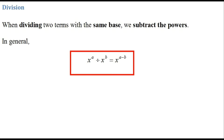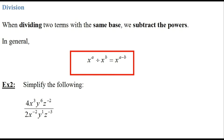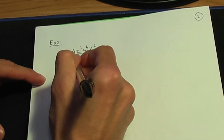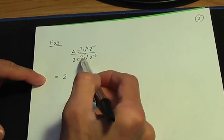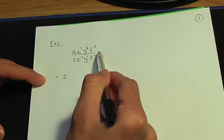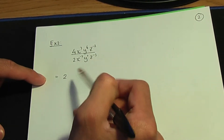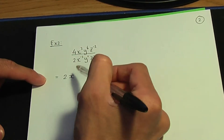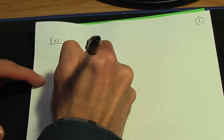Let's see this rule in action with an example. Example 2: simplify the following. We have 4x to the power 3, y to the power 6, z to the power minus 2, divided by 2x to the power minus 2, y to the power 1, z to the power minus 3. First, let's divide the numbers — 4 divided by 2 is 2. These two x terms have the same base. Whenever we divide, we subtract powers — top power minus bottom power. In this case, it's 3 minus minus 2, which is 5. For the y terms, both have the same base y, so y to the power 6 divided by y to the power 1 is y to the power 6 minus 1, which is y to the power 5.